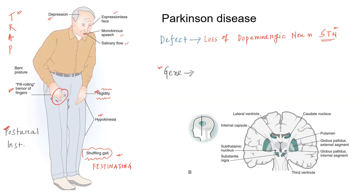Now coming to the genetic defect, there are various genes involved in Parkinson's disease, but two important genes to remember. One is SCNA, which is present on chromosome 4, and this codes for alpha-synuclein. Alpha-synuclein will form the inclusion known as Lewy body, which we get in Parkinson's disease. Alpha-synuclein is responsible for neuronal damage. The SCNA gene on chromosome 4 will produce autosomal dominant Parkinson's disease.